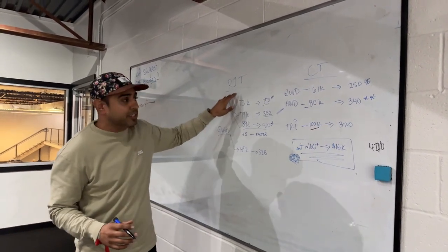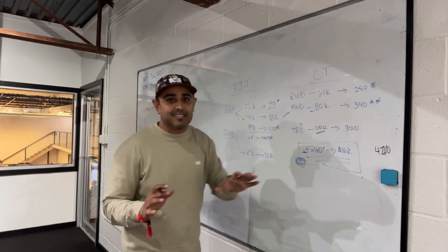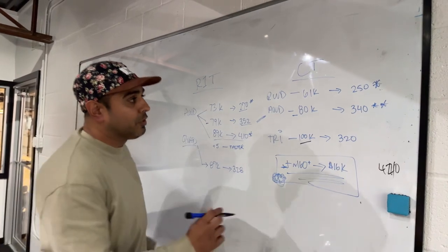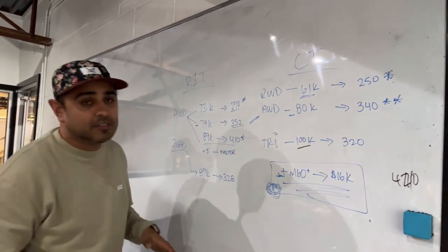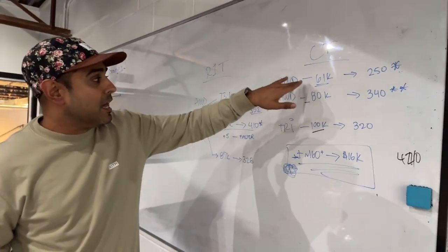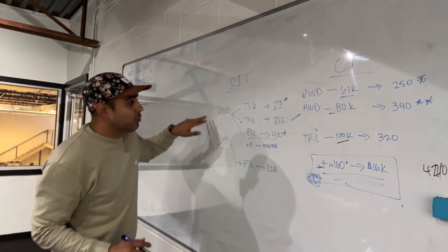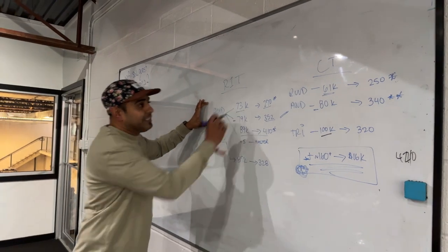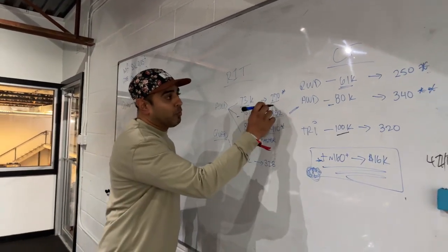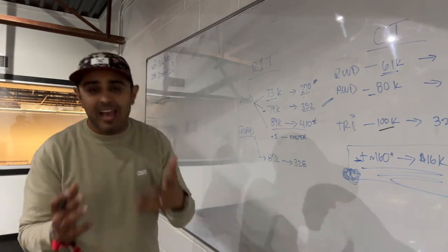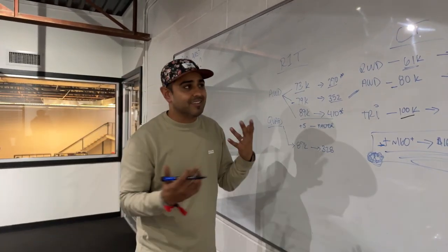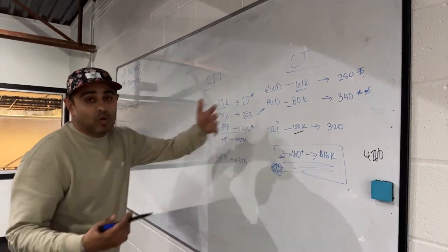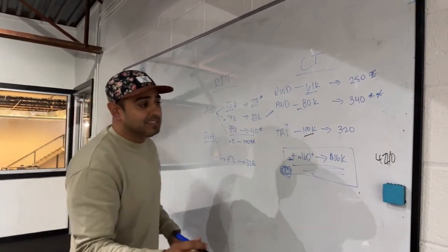Let's break down the pricing. Cybertruck is starting with a rear-wheel drive model at $61,000, a pretty good price, especially when you look at Rivian. They don't have a rear-wheel drive option, only all-wheel drive starting at $73,000. Now the Rivian, you're getting more range and all-wheel drive. I don't know about you, but if I'm getting a truck, I kind of want it to be all-wheel drive.